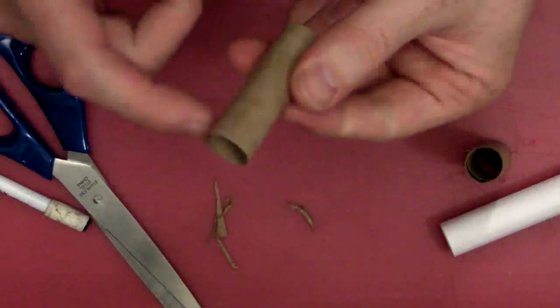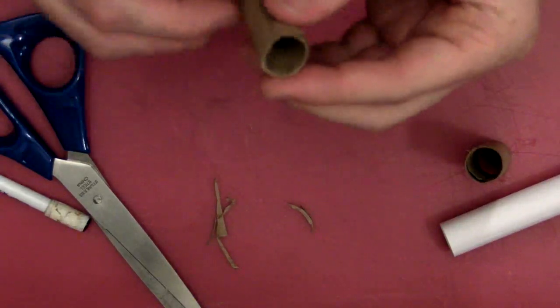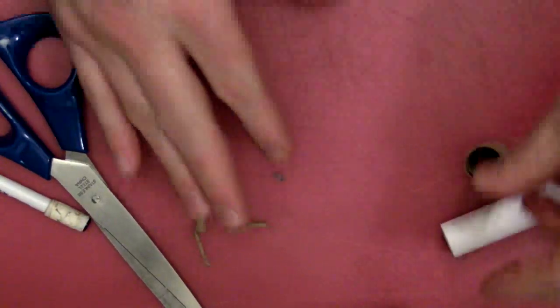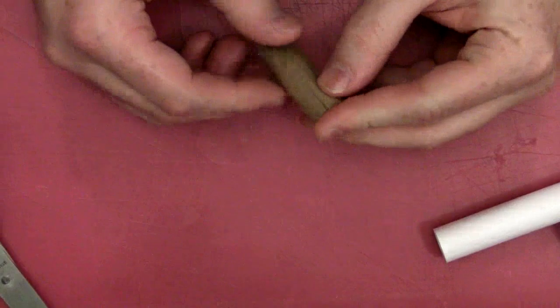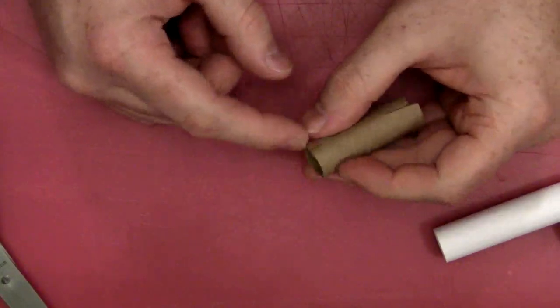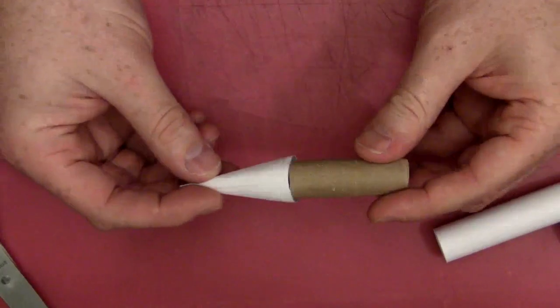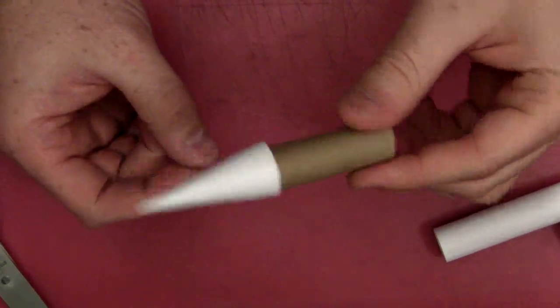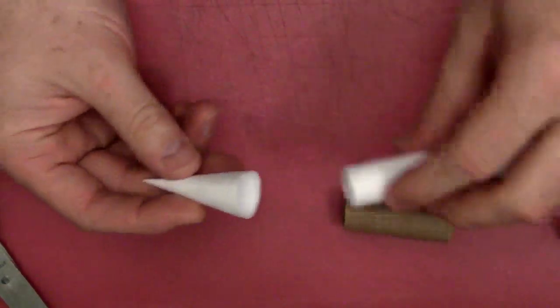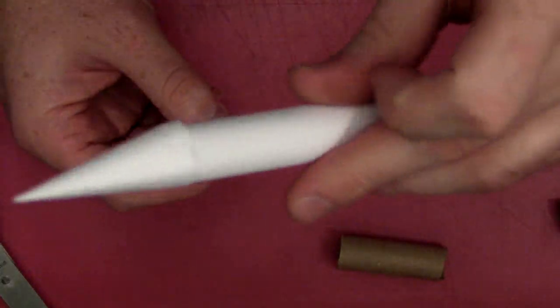We're actually going to trim this to length later so don't fret too much about being sure both sides are the same. I trimmed down the top side of this one. As a sanity check you'll want to be sure that it fits inside your cone like that. And you'll also want to be sure that your nose cone fits over the body.